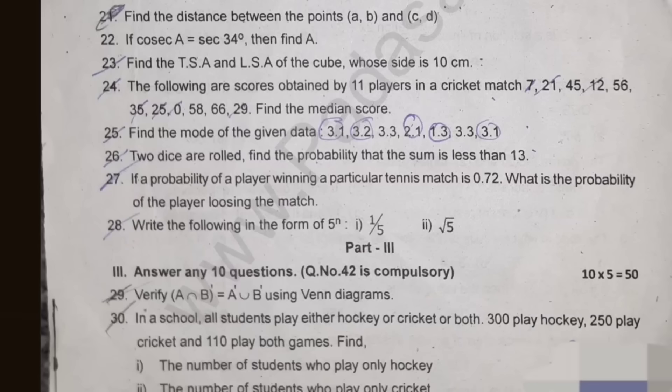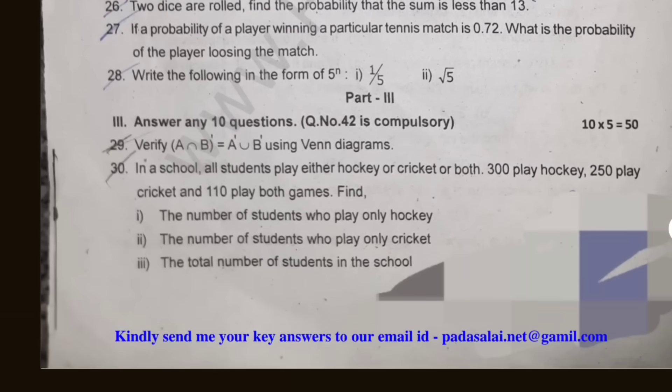One 20-mark question is optional. It involves using Venn diagrams. This is a 5-mark question.